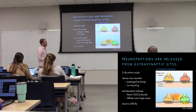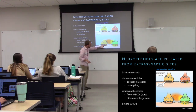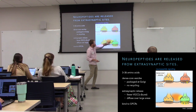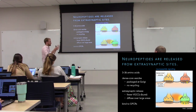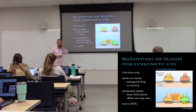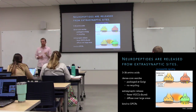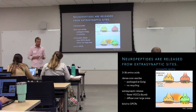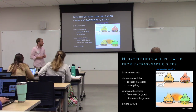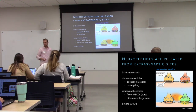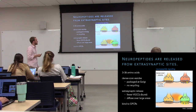Neuropeptides are released extrasynaptically and diffuse over a much larger area — not immediately adjacent to target receptors. Their receptors are the metabotropic kind, also called G-protein coupled receptors, which don't generate fast synaptic currents but rather slower, long-lived changes in cell function affecting metabolism. We call them metabotropic.